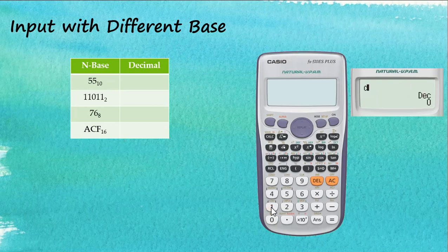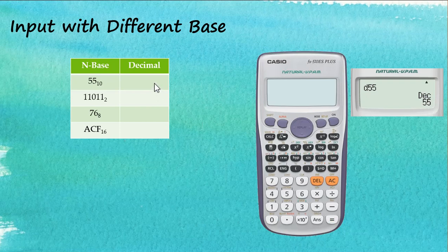So this is decimal, and the value of this number is 55. When we click equal, we can see that in a decimal system this is written as 55 — so decimal 55.